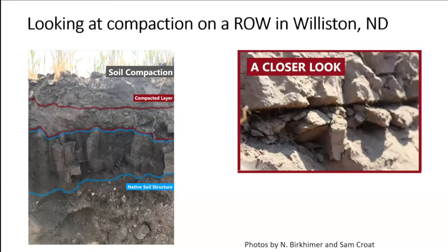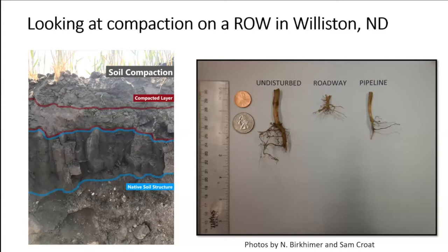Sam Crow took pictures for us, and you can see where that compaction really starts to shape up. If we look at some of the roots that Nick extracted — the undisturbed versus the roadway versus the pipeline — there's no reason to wonder why we see yield reductions over the roadway more so than over the pipeline. The pipeline is pretty narrow and doesn't get driven on a lot. Oftentimes yields above the pipeline can be greater for a few years than undisturbed areas because you're mixing, aerating, and have a lot of nutrient cycling — a flush of nutrients occurs.